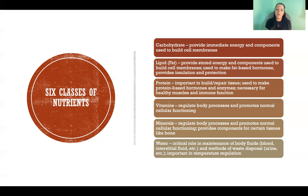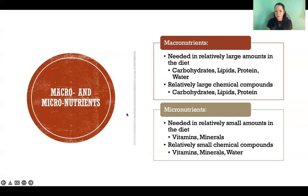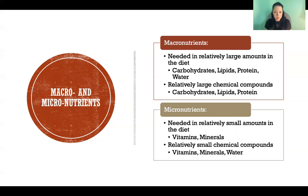We also use water for temperature regulation, primarily via sweating. So our six classes of nutrients can be divided into macro and micronutrients. One definition is about how much of it we need in the diet — macronutrients we need in relatively large quantities, and micronutrients we need in relatively small amounts. Based on that definition, macronutrients would be carbohydrates, lipids, proteins, and water, while vitamins and minerals would be micronutrients that we need in relatively small amounts.